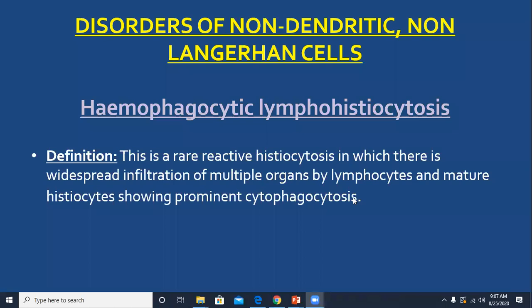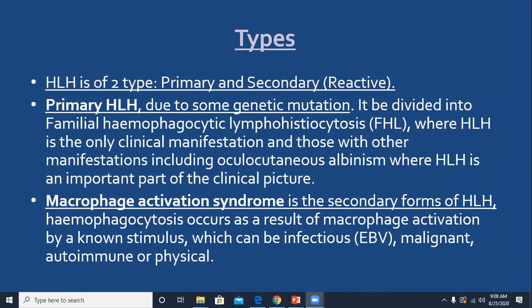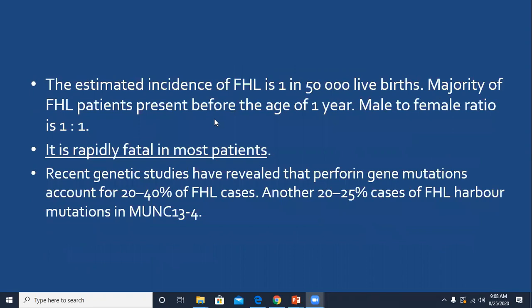It is a reactive histiocytosis in which there is widespread infiltration of multiple organs by lymphocytes and mature histiocytes showing prominent cytophagocytosis. There are two types: primary and secondary, the secondary form also called macrophage activation syndrome. It is a rare disease with an incidence of 1 in 50,000 but is rapidly fatal in most patients — that is why it is important.